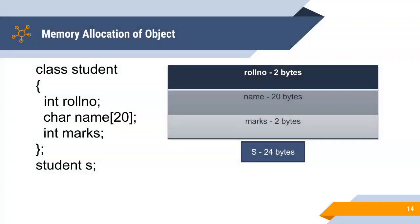Memory allocation of object. As I stated earlier, it depends on its data members. Here we define a class student. And it has three members. We can estimate the total memory occupied by its object S. So here we declare the object of this class student S.